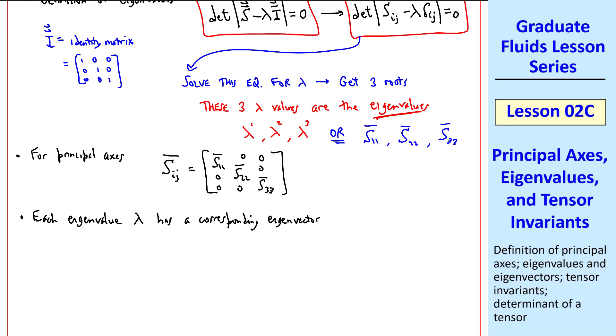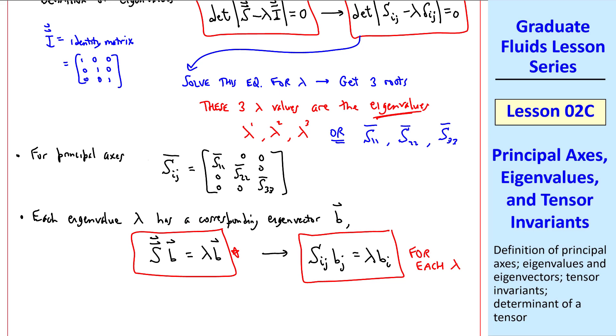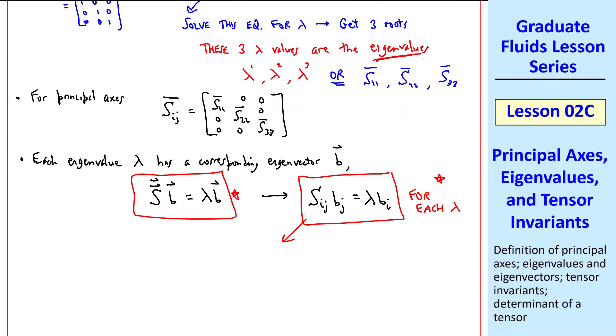Again, we use superscripts 1, 2, and 3. Or, S11 bar, S22 bar, S33 bar. Because for principal axes, our tensor in matrix form looks like this, where the overbar implies principal axes. Each eigenvalue lambda has a corresponding eigenvector, which we denoted as B. In vector notation, tensor S times vector B gives a tensor which is simply lambda B. In vector notation, the product of a second-order tensor and a vector becomes a vector. This vector is simply a multiple of B itself, the multiplication factor being lambda, the eigenvalue. Recalling that B is a unit vector and lambda is a magnitude.